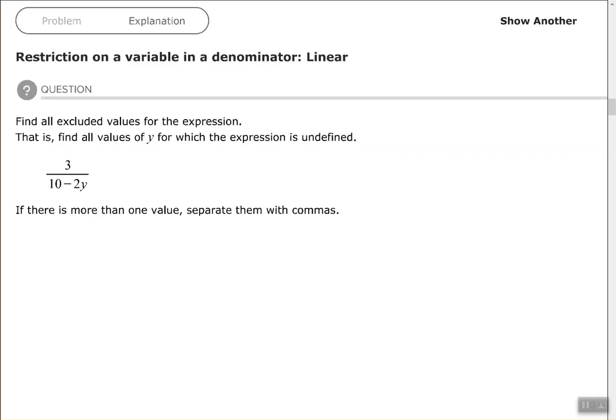All right, so here we have the same thing. We want to find the excluded value or values for the expression. We have 3 over 10 minus 2y. To find our excluded values, we are only focused on our denominator. Whatever will make our denominator equal zero will be an excluded value, because anything divided by zero is undefined.